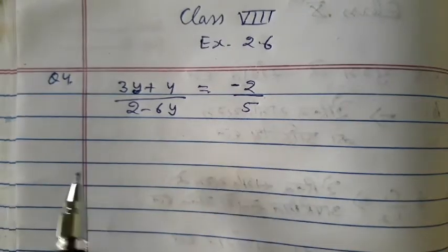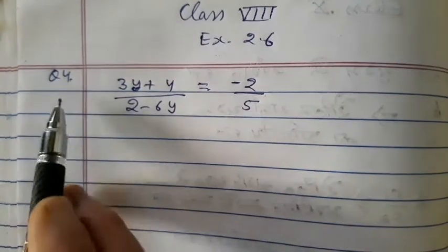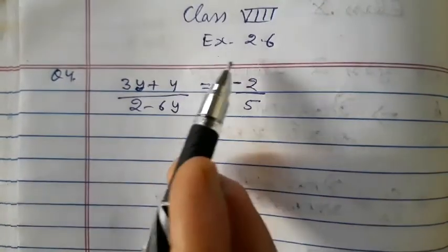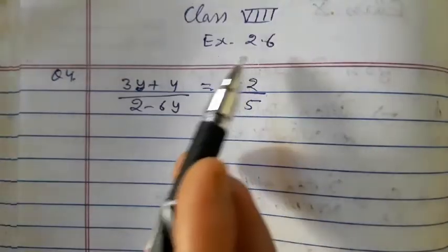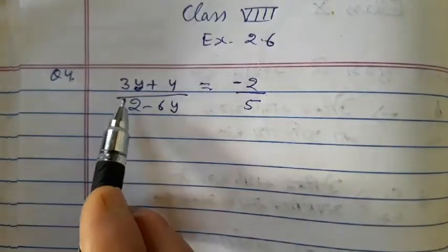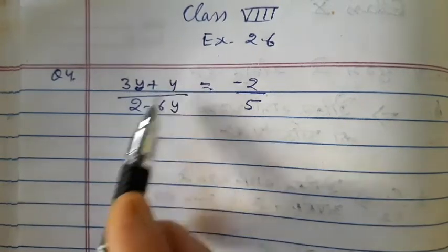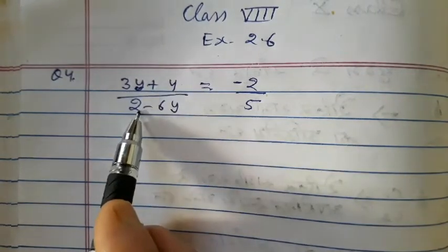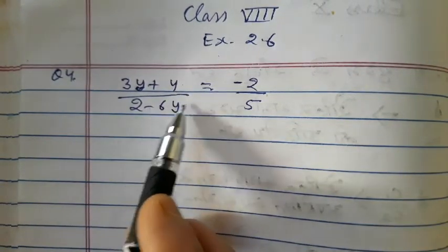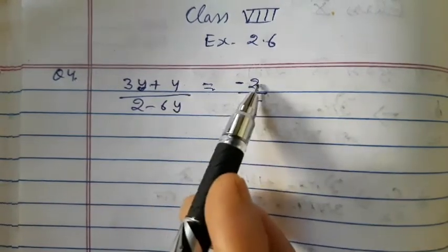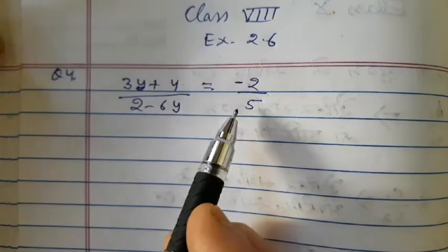Good morning students. Today we will do question number 4 of exercise 2.6. The question is: (3y + 4) / (2 − 6y) = −2/5.